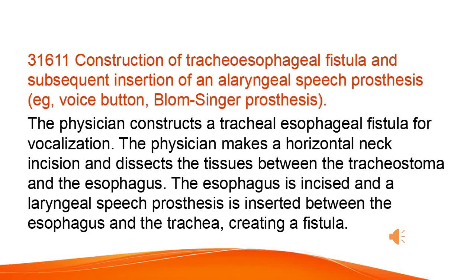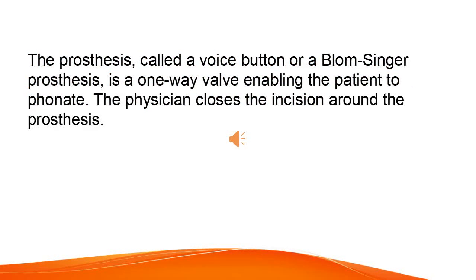Construction of Tracheoesophageal Fistula and Subsequent Insertion of an Alaryngeal Speech Prosthesis (e.g., voice button, Blom-Singer prosthesis): The physician constructs a tracheal-esophageal fistula for vocalization. The physician makes a horizontal neck incision and dissects the tissues between the trachea stoma and the esophagus. The esophagus is incised and a laryngeal speech prosthesis is inserted between the esophagus and the trachea, creating a fistula. The prosthesis, called a voice button or Blom-Singer prosthesis, is a one-way valve enabling the patient to phonate. The physician closes the incision around the prosthesis.